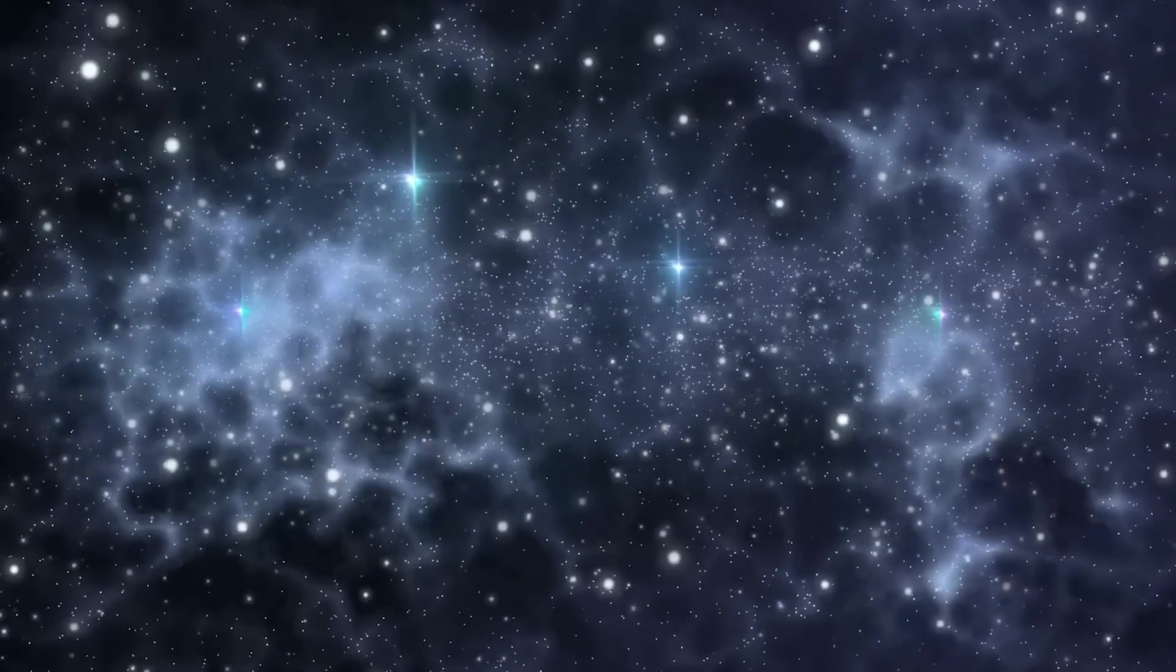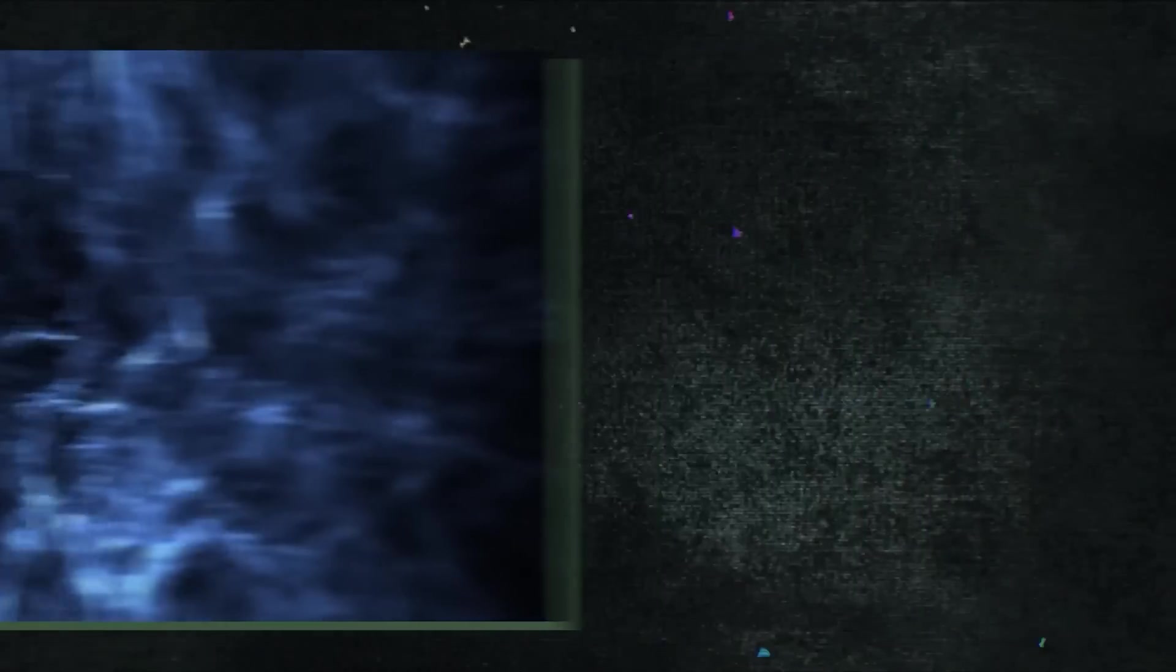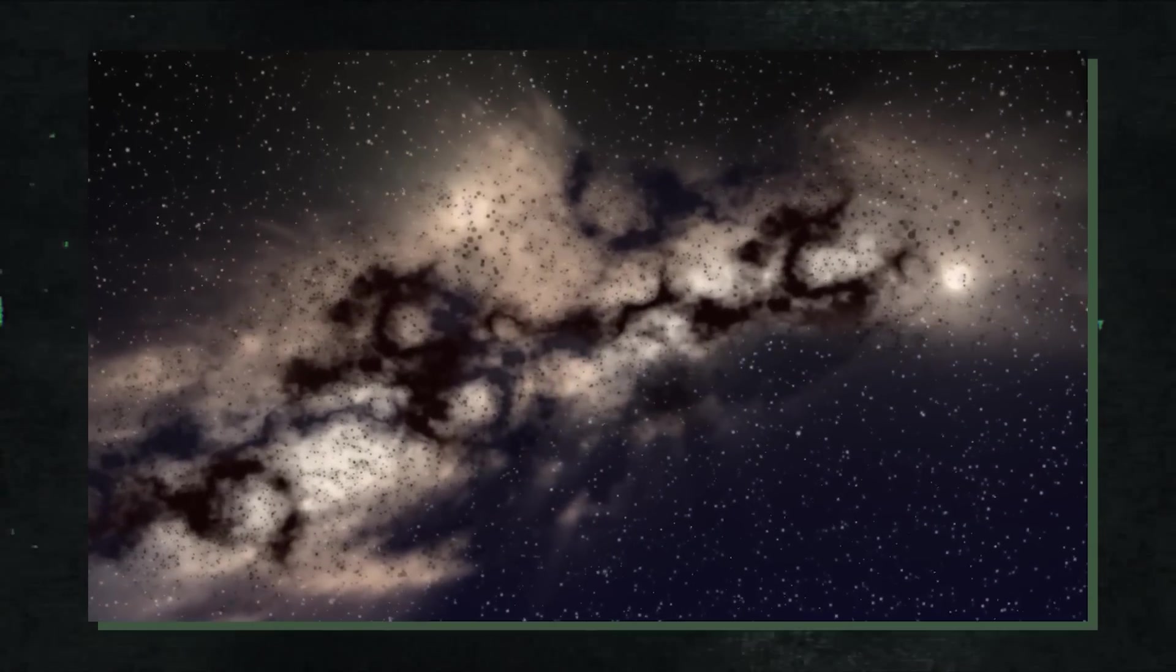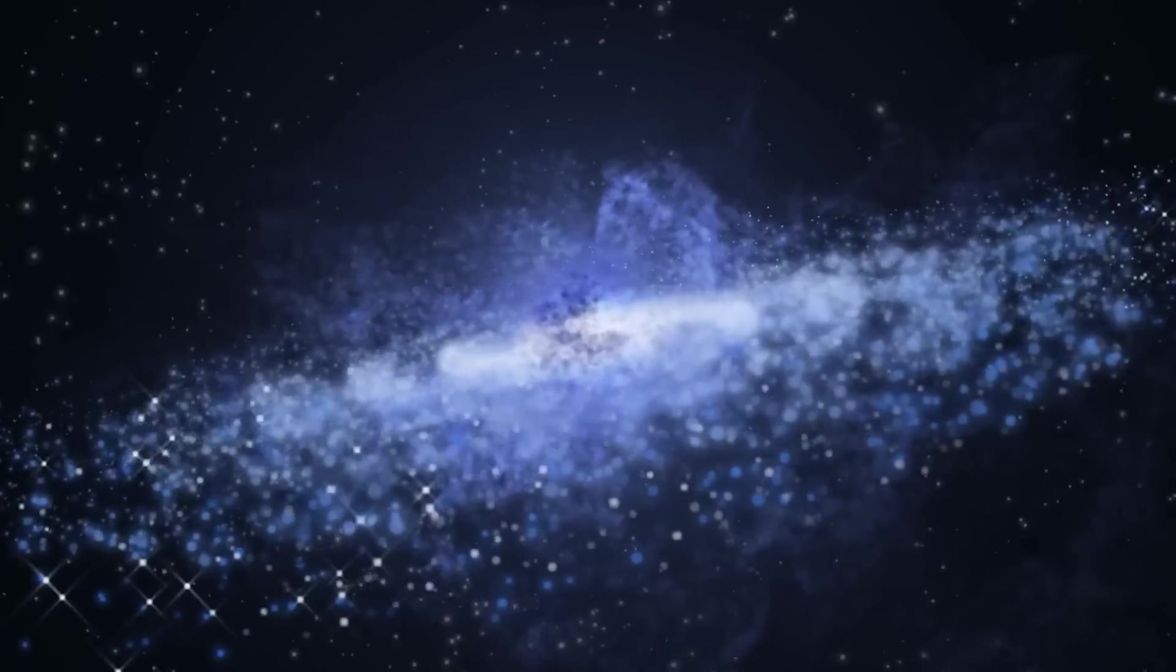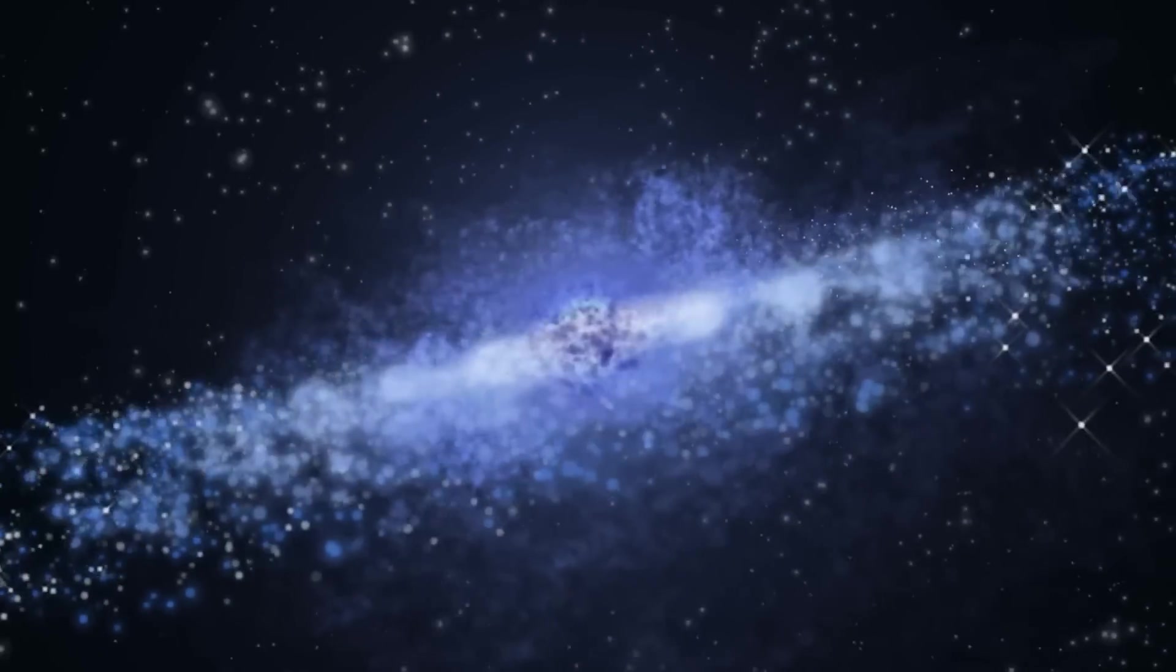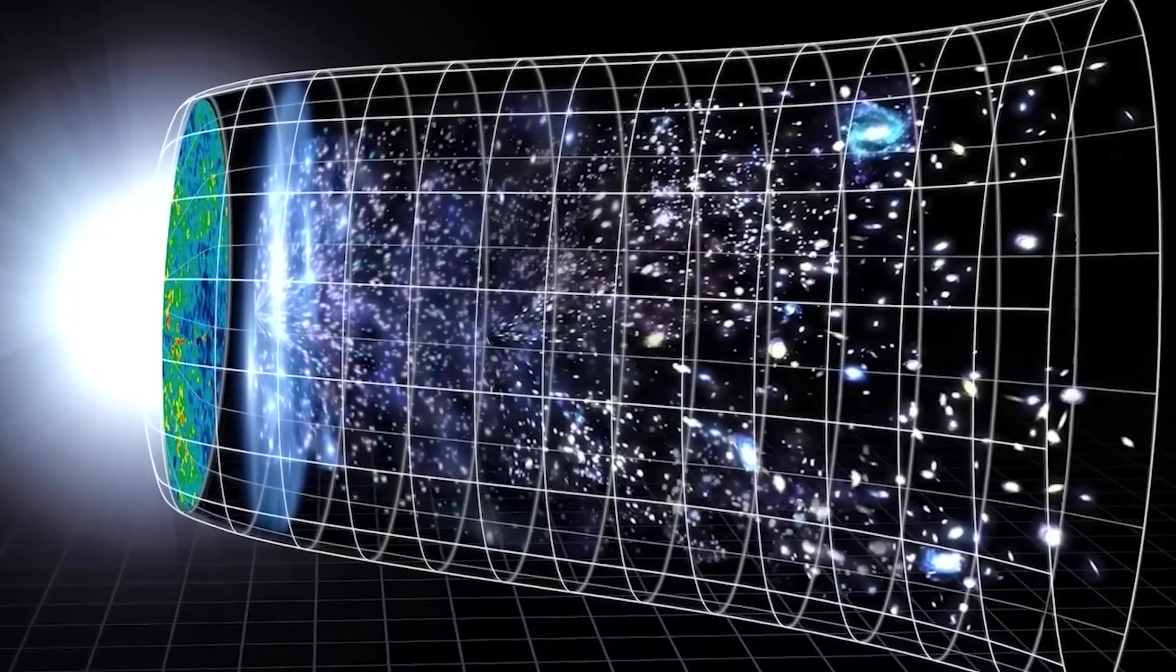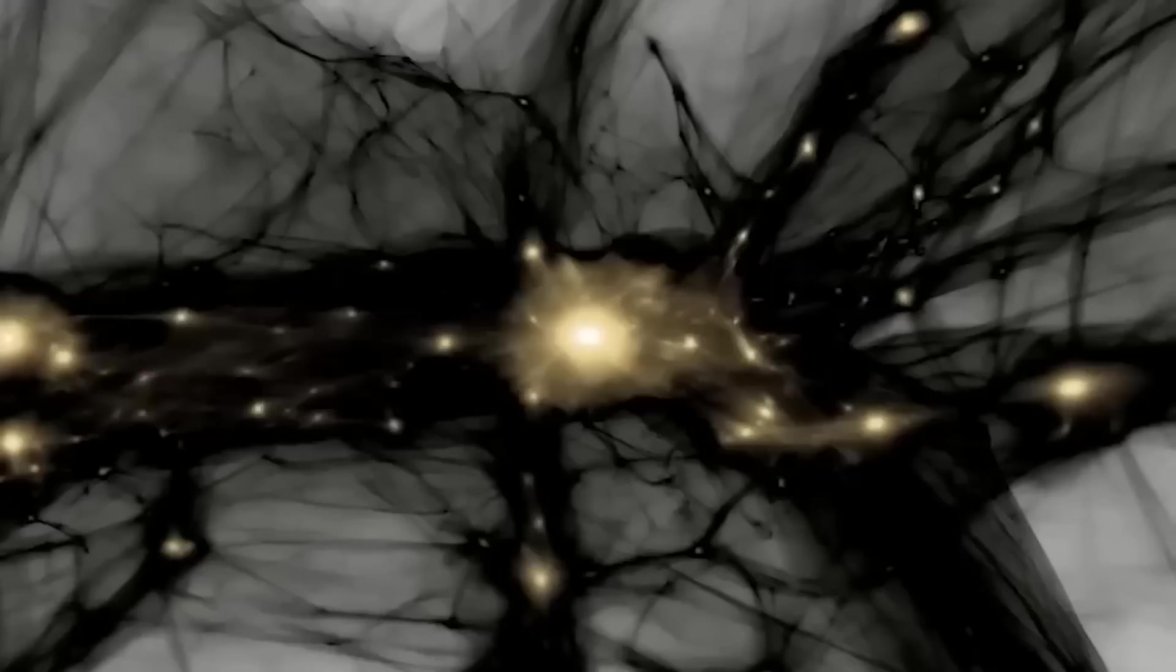What is dark matter? Around 85% of the universe's matter is thought to be made up of dark matter, a hypothetical entity. It is referred to as dark since it cannot be directly detected because it does not emit, absorb, or reflect light. Only by its gravitational influence on visible matter, like stars and galaxies, can we see its impact.